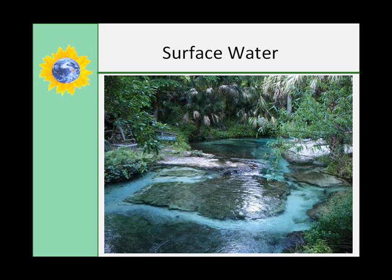Surface water is a term usually applied to the collective fresh water on land that first falls as precipitation — which is more or less pure fresh water — and collects in rivers, streams, ponds, and lakes, as well as on the surface of the land. Surface water moves downslope under the influence of gravity and creates streams, rivers, lakes, and associated landforms over geologic time, eventually reaching base level, which is usually sea level, where sediments carried by the streams are deposited.